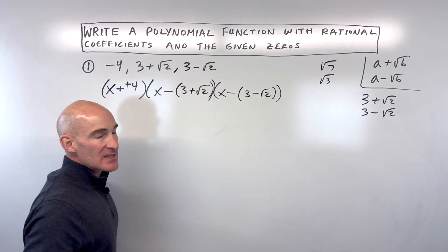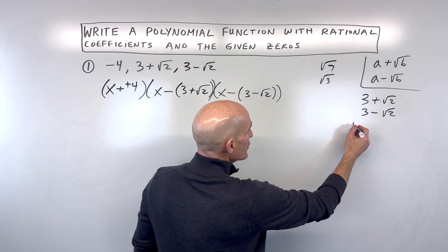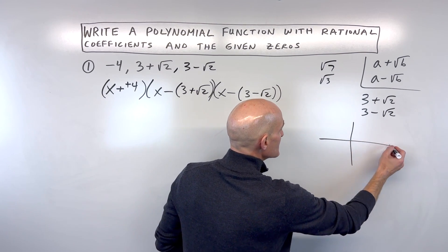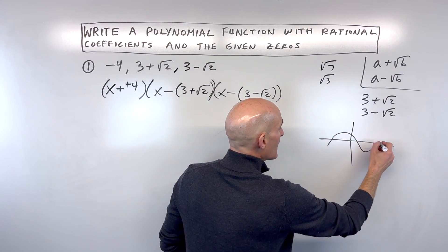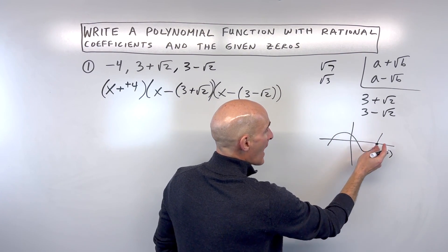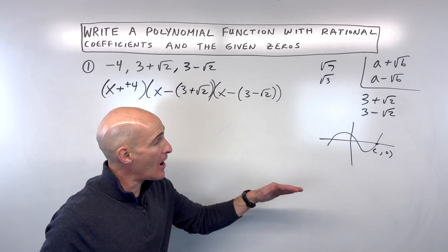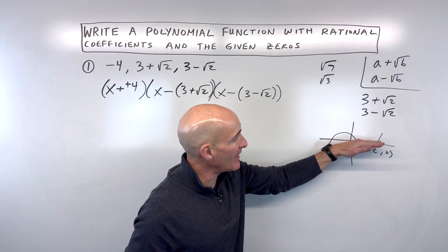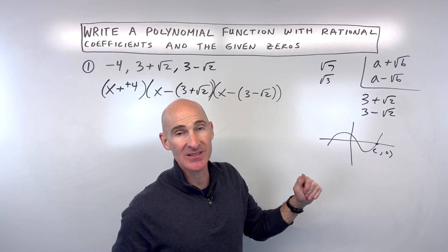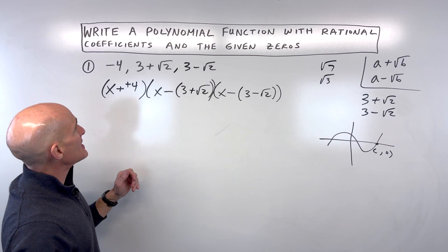Now, what exactly is a zero? A zero is an x-intercept. The reason they call it a zero is because the y-coordinate is zero — you're not going up or down, you're right on that x-axis.